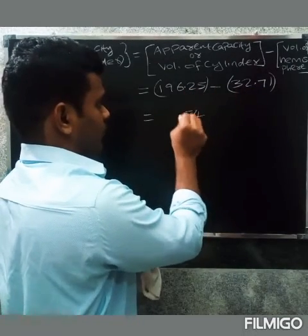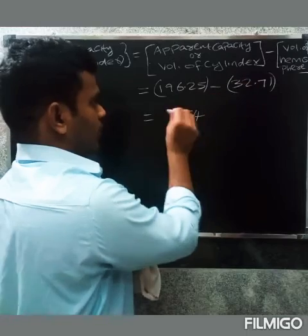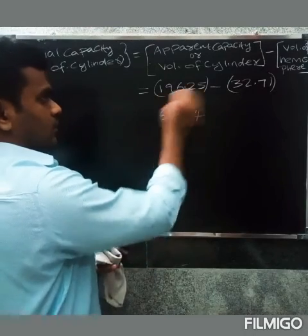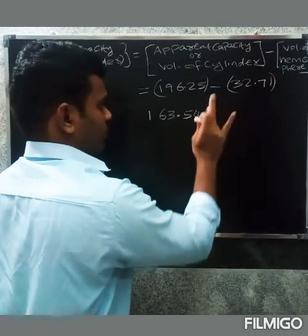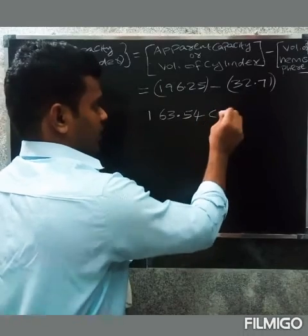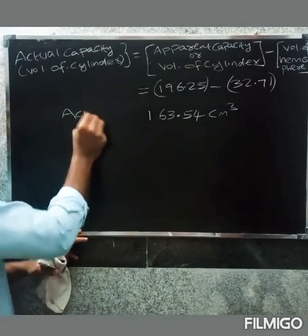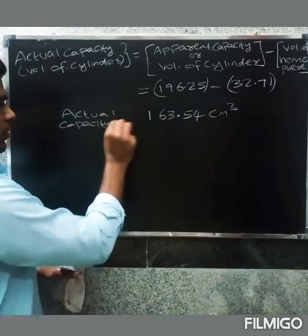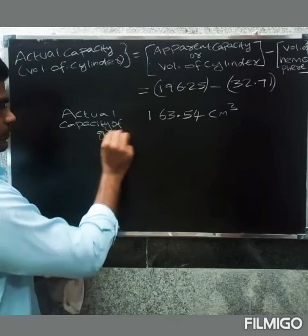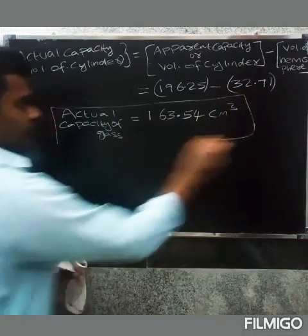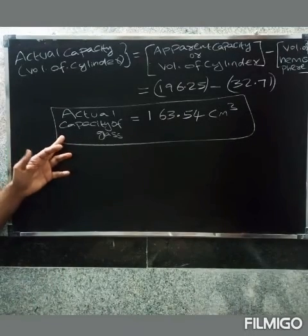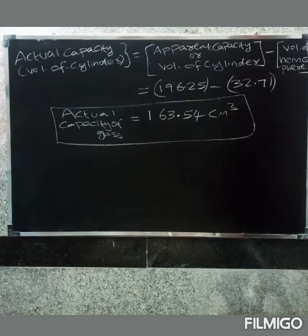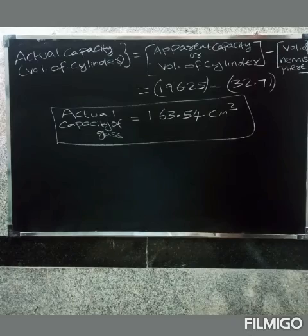Subtracting these values gives 163.54 cubic centimeters. This is the actual capacity of the glass.